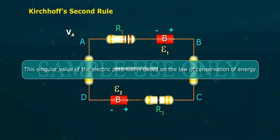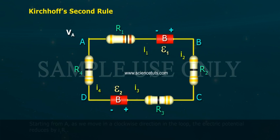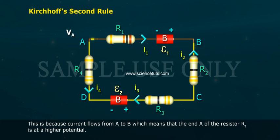This singular value of the electric potential is based on the law of conservation of energy. Starting from A, as we move in a clockwise direction in the loop, the electric potential reduces by I1 R1. This is because current flows from A to B,